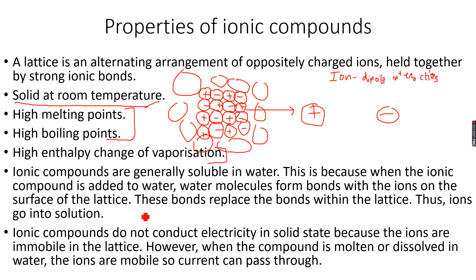So when a voltage is applied, a current can pass through because these ions become mobile in the molten state or when they are present in solution. This is what you need to remember.